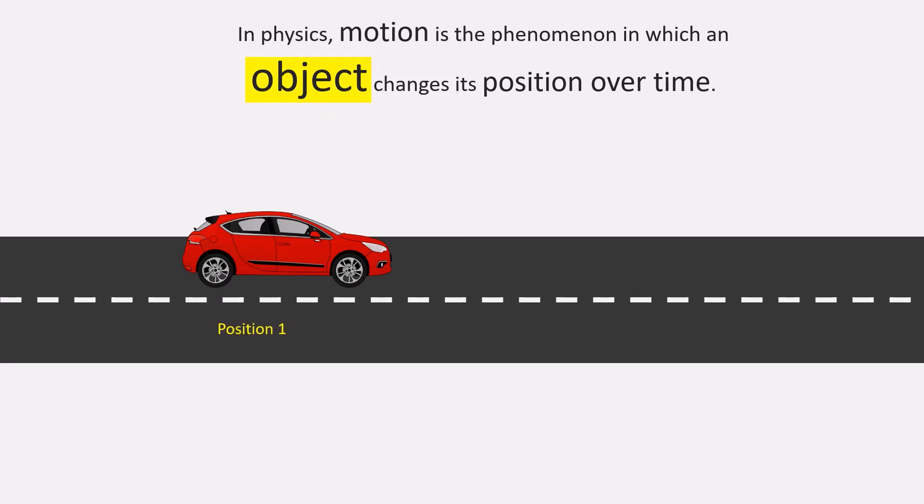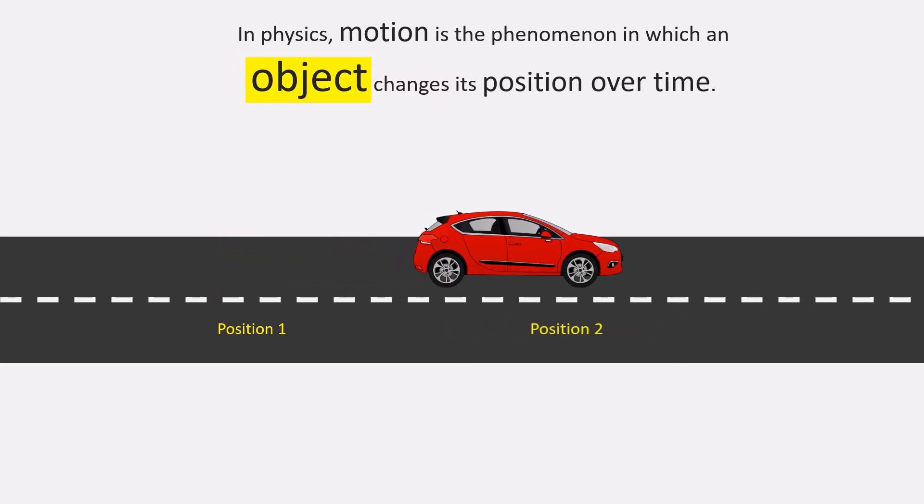In this case, a red car is our object and it is moving from position 1 to position 2.